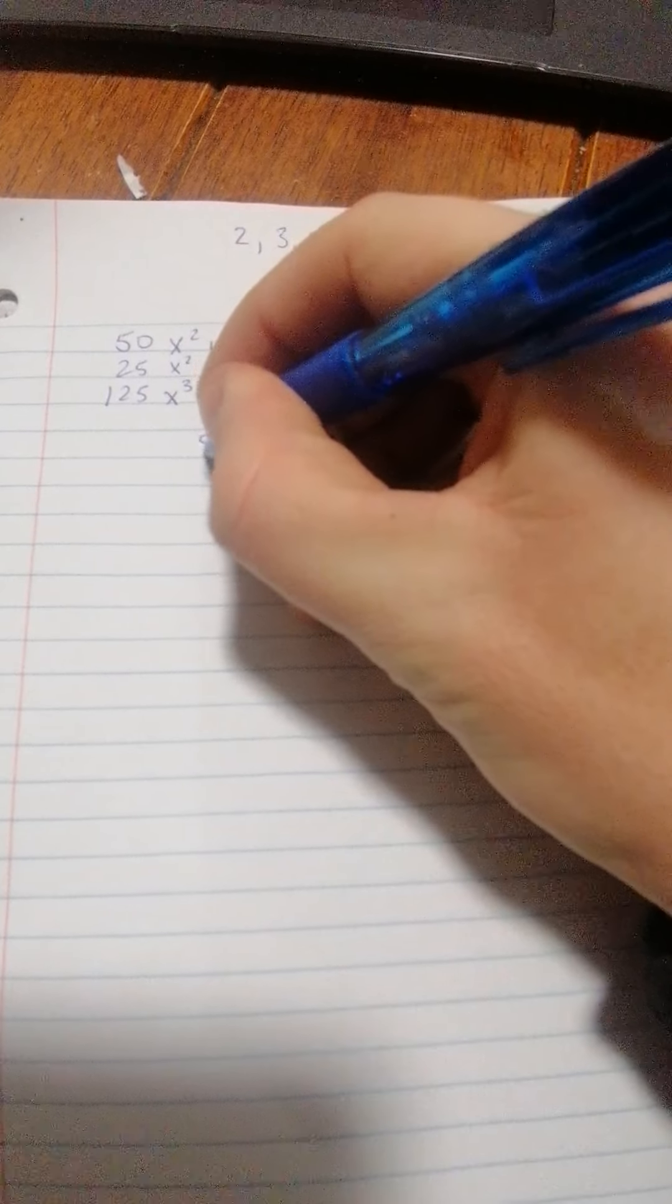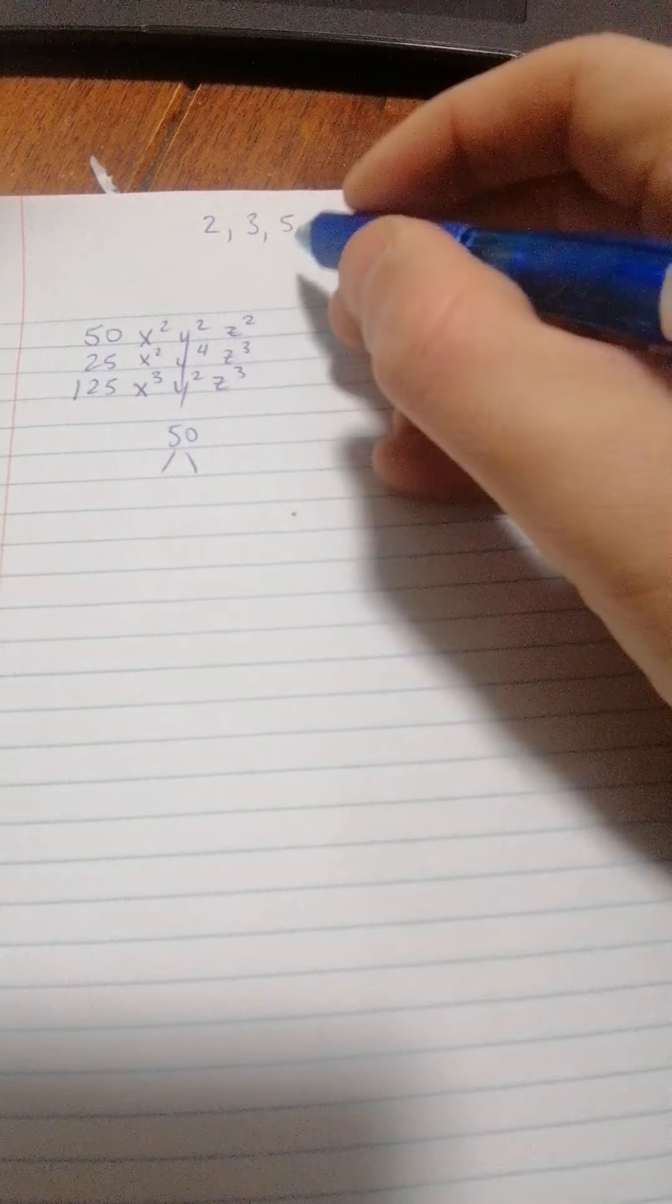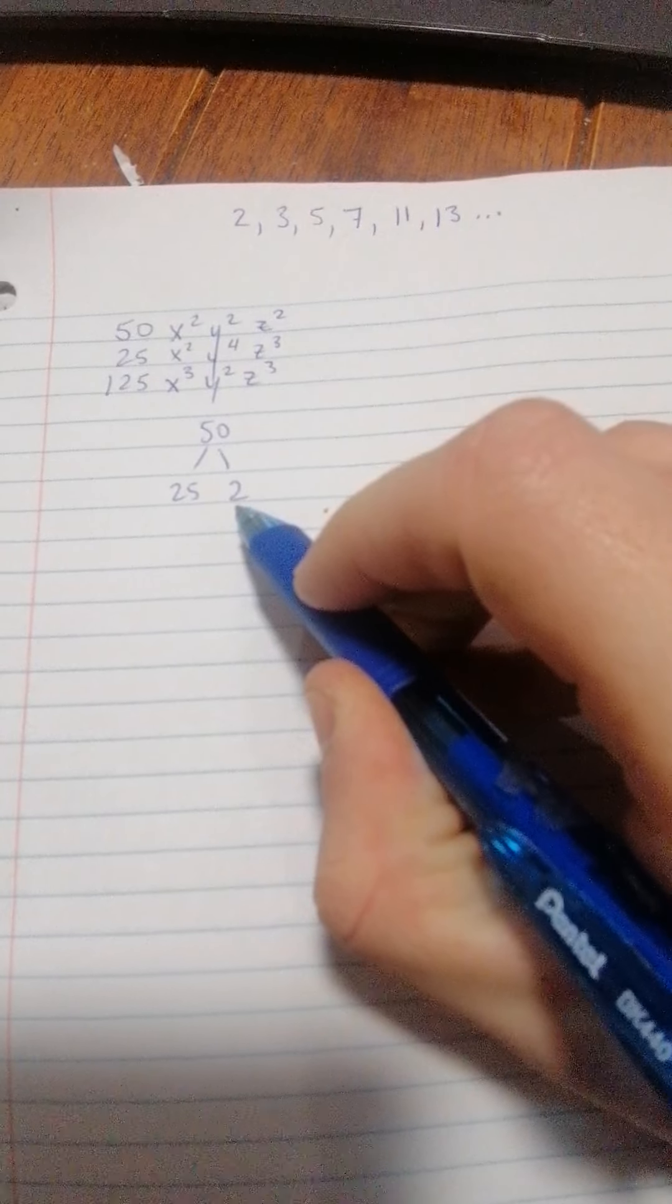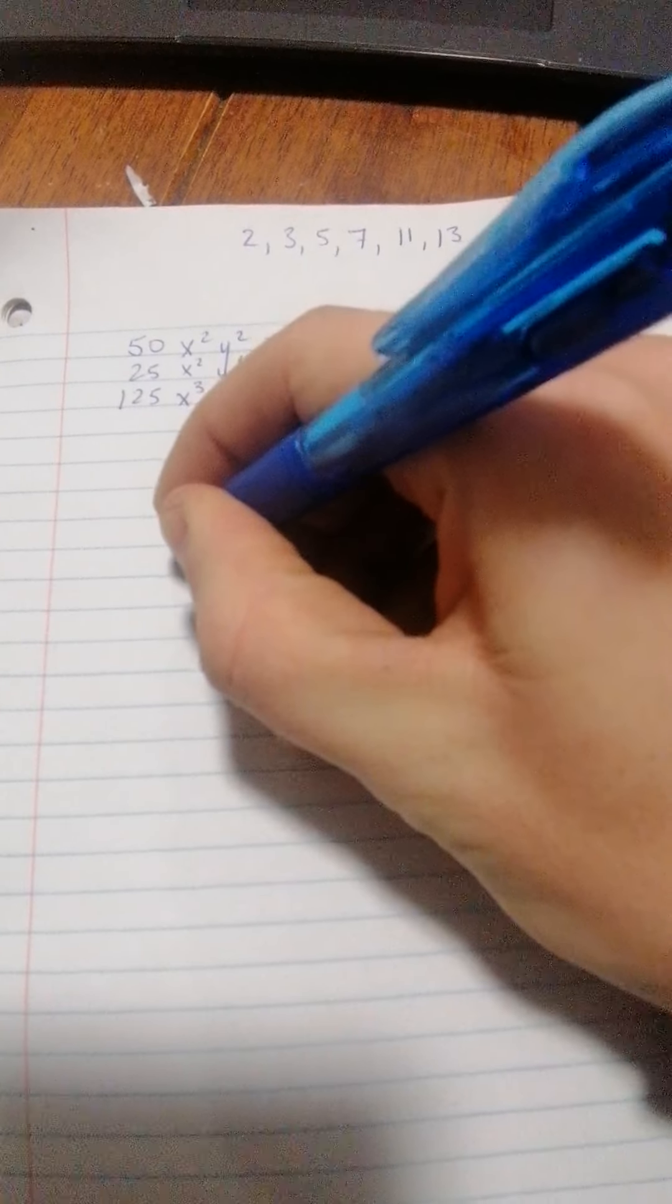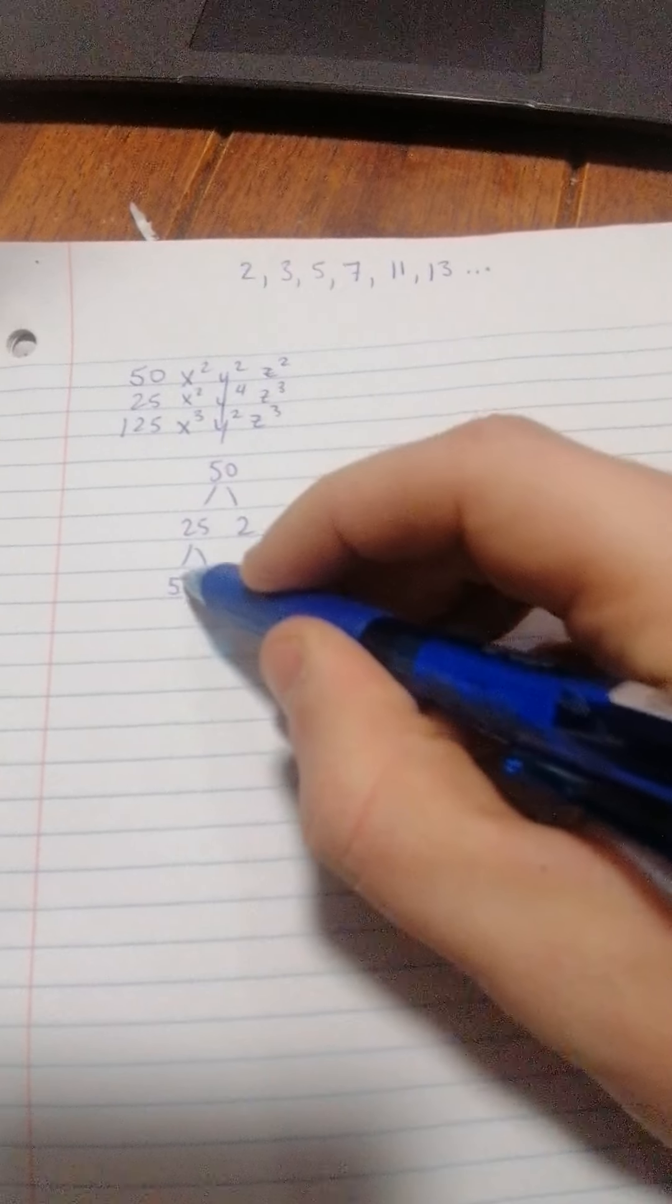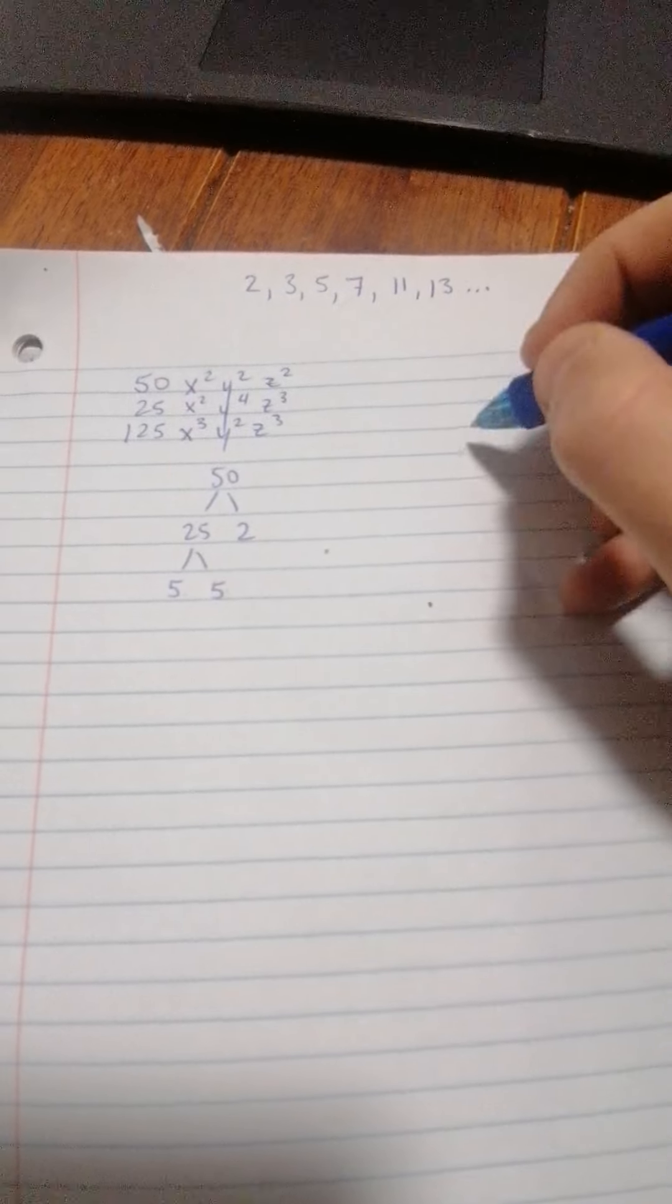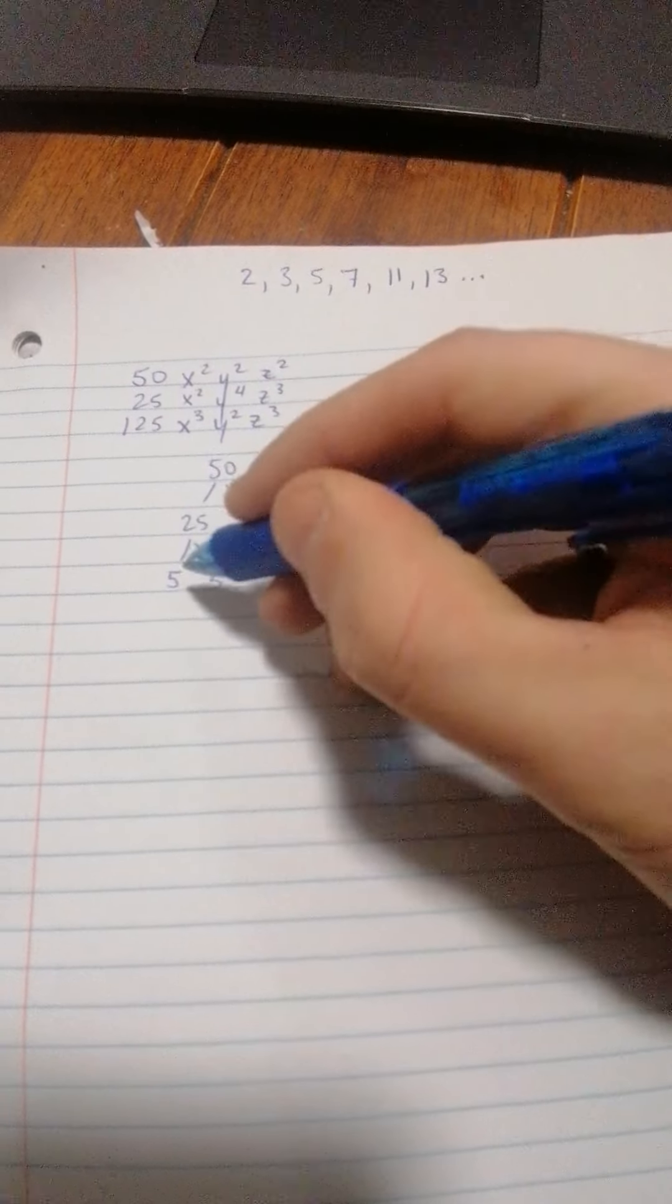So starting with 50, the way I do it: 50, we'll start with prime number 2. Yep, that works. But 25 cannot be divided by 2 evenly and cannot be divided by 3 evenly, but 5 works. 25 divided by 5 equals 5. So these are the prime factors of 50. For that equation it's 5, 5, and 2.